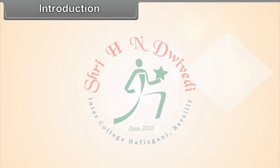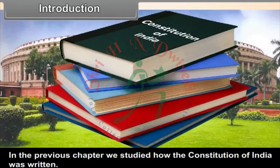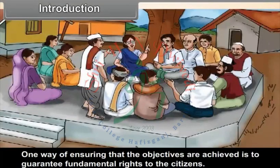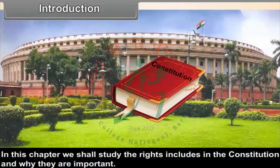Chapter 6: Fundamental Rights and Duties. In the previous chapter, we studied how the Constitution of India was written and its main objectives. One way of ensuring that the objectives are achieved is to guarantee fundamental rights to the citizens. In this chapter, we shall study the rights included in the Constitution and why they are important.